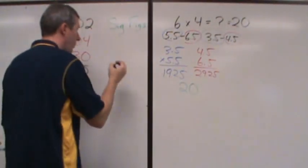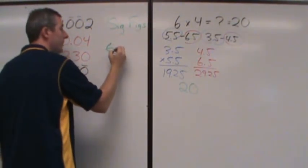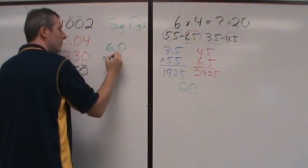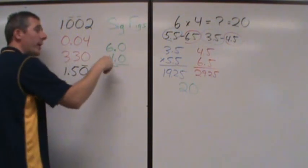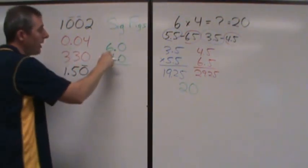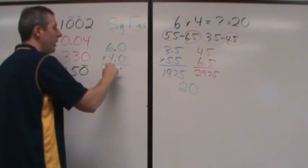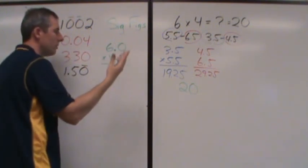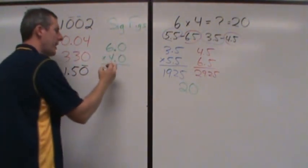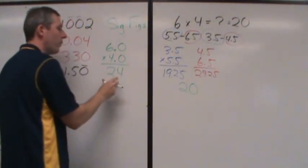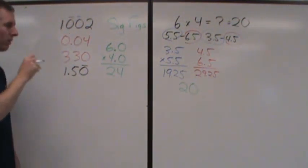If we wanted 6 times 4 to be 24, we would have to measure better. We would have to say 6.0 times 4.0. At that point, now I have a much more narrow range. Now it's 5.9 something to 6.1 and maybe 3.9 something to 4.1.